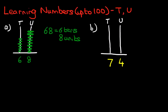So on the right-hand side, the units we've got is 4. So we draw 1, 2, 3, 4. For the tens, we have is 7: 1, 2, 3, 4, 5, 6, 7.